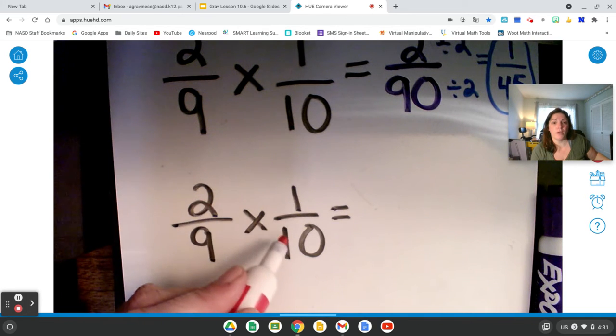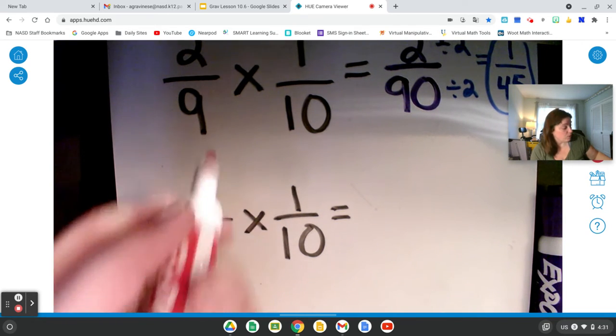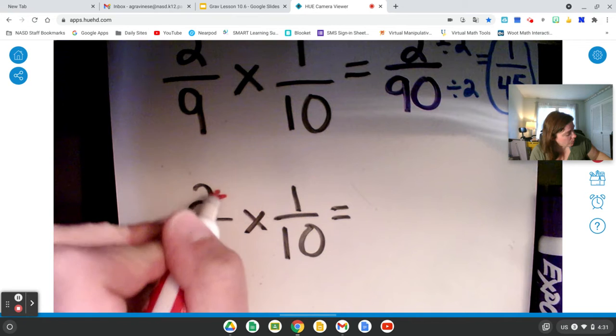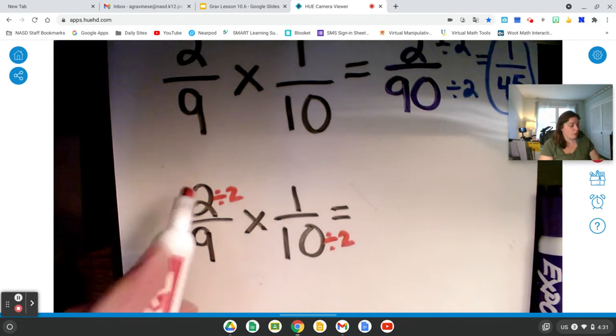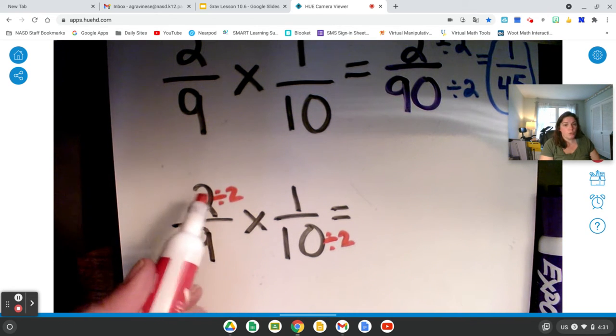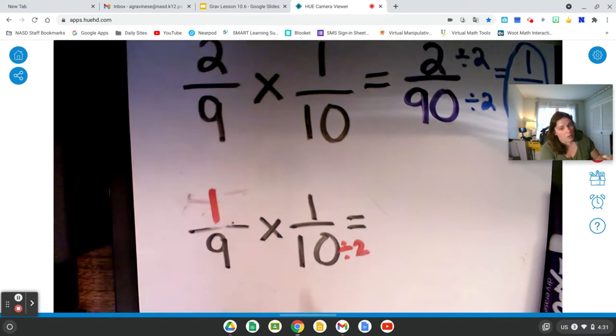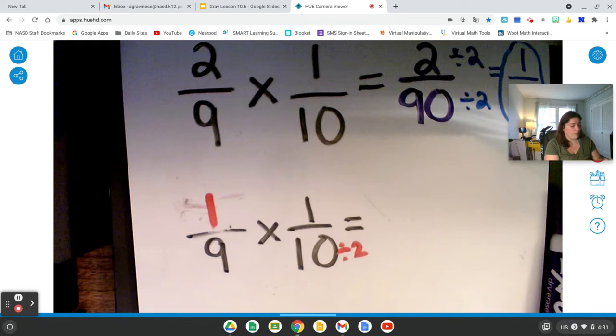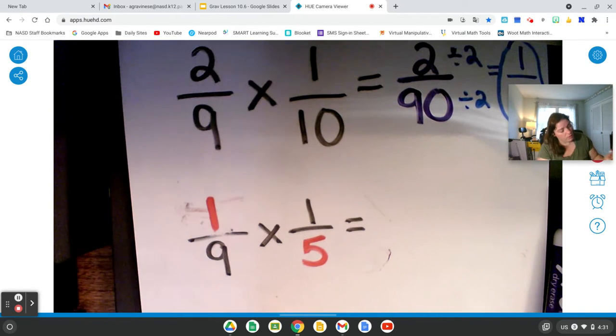Ah, 2 and 10 can get simplified because 2 and 10 are both divisible by 2. So let's divide both 2 and 10 by 2. And then we will change those numbers within the fraction. All right. 2 divided by 2 is 1. So I can make this a 1. 10 divided by 2 equals 5. So I can make this denominator a 5.